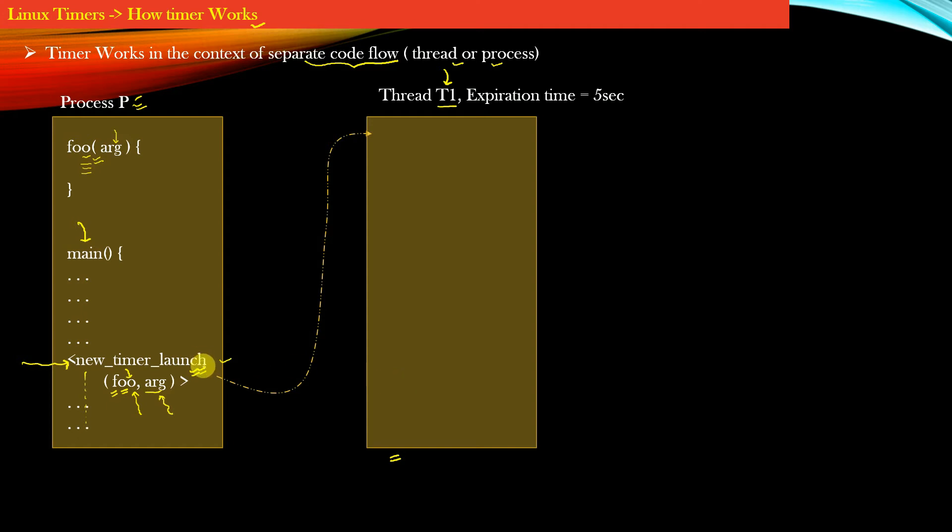Now let us suppose that this API created a thread with expiration time equal to 5 seconds. So as soon as the process P had forked out this thread in order to create a timer, this thread will not execute and it will stay blocked.